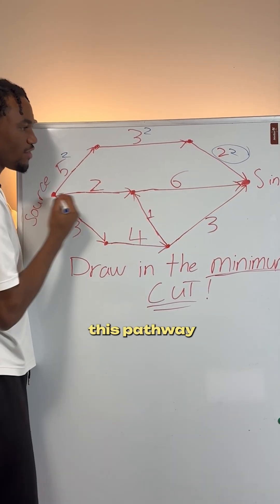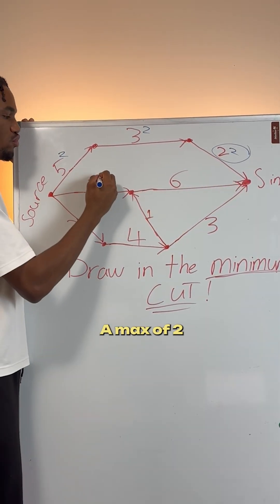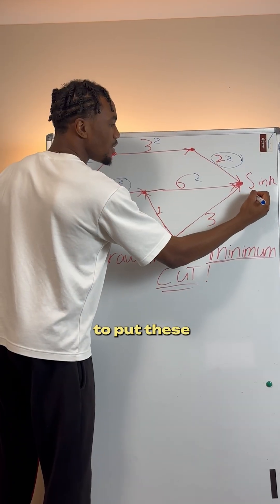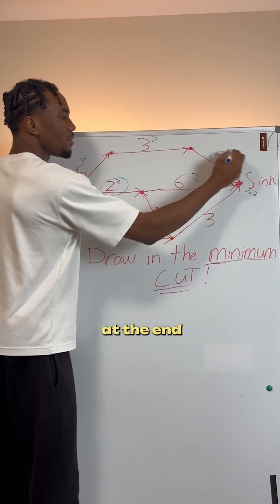How much can fit through this pathway here? A max of two, because we're capped at our lowest number. Circle this because it's full, and we're just going to put these at the ends. So this one in this.